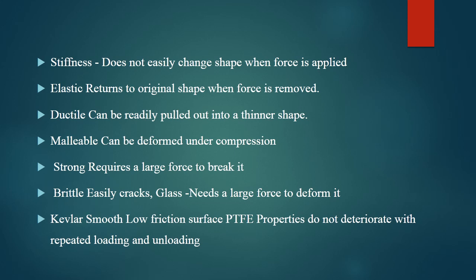Malleability — it can be deformed under compression. When force per unit area is applied, it becomes malleable, meaning it is completely deformed into a different shape under compression. Strength means a large force is required to break it. Brittleness — like glass — it easily cracks, and you need a large force to deform it. Glass is a classic example of brittleness.